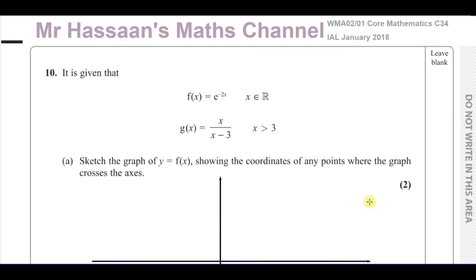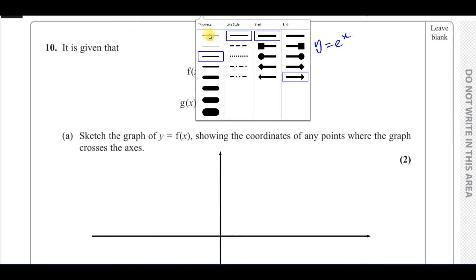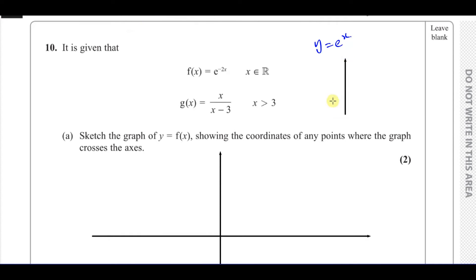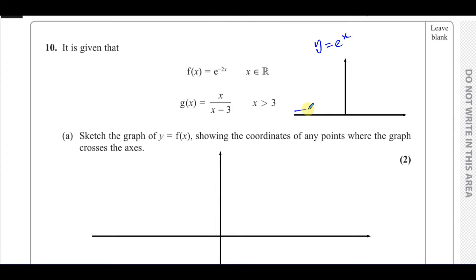What we've got to realize is if we have just y equals e to the power of x, it would look something like this. e to the power of x would have this type of shape. Remember, e is just a number — it's 2.718 something — to the power of x, it's going to have this type of shape: exponential increase.